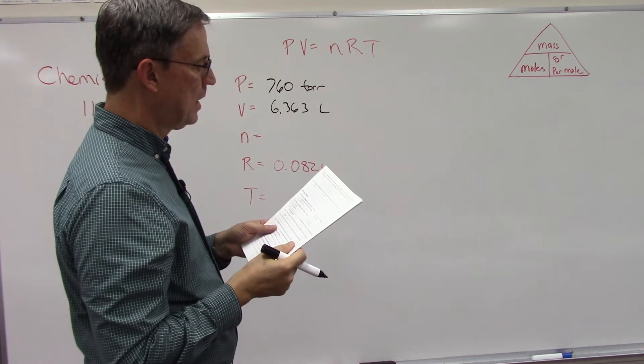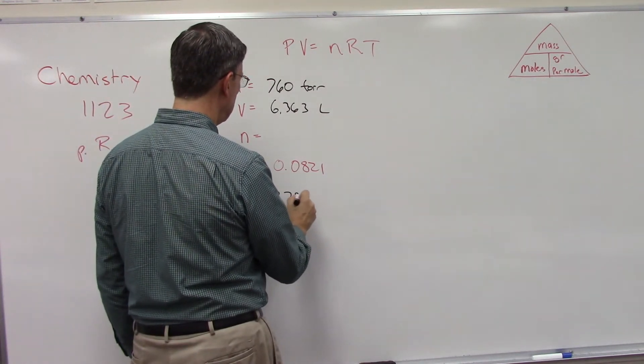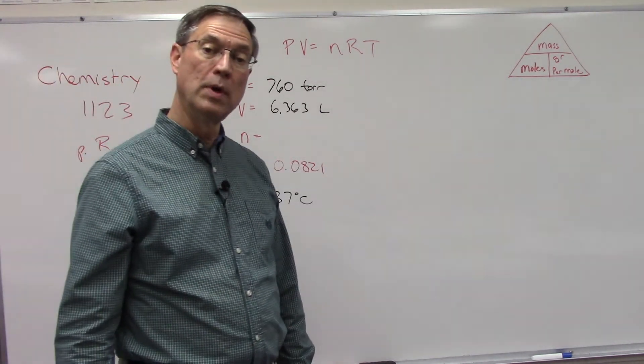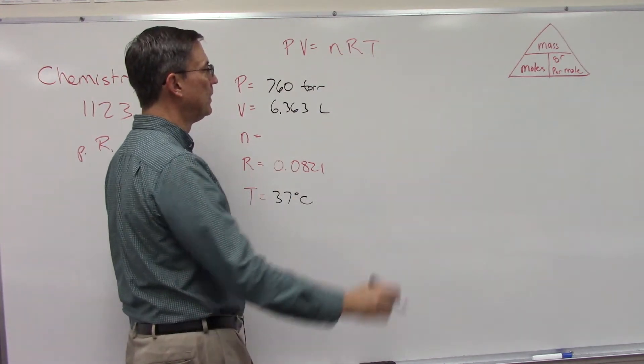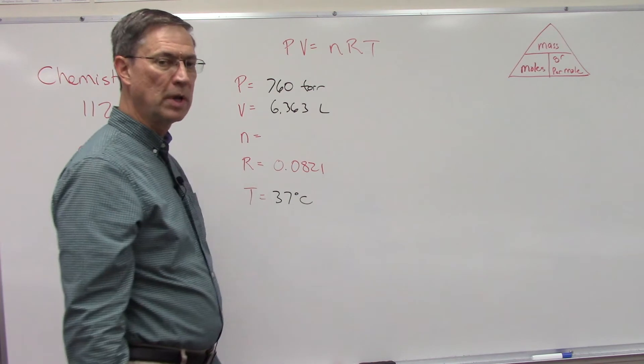The temperature is 37 degrees Celsius. That means the one thing we don't know is the number of moles. So I could plug into this and solve for n. I'll show you how to do that in a minute.